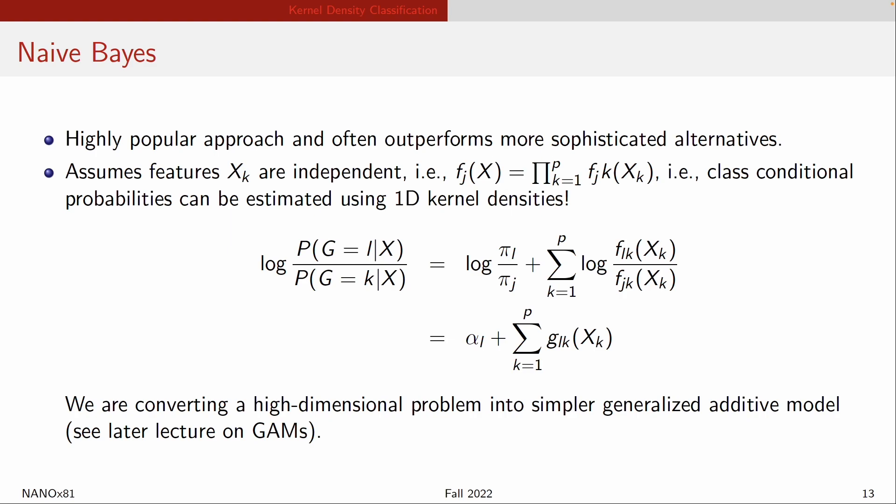Essentially you now have a summation of functions, one function for melting point, one function for boiling point, one function for electronegativity, but no functions that combine multiple variables together. This is why it is called a generalized additive model.